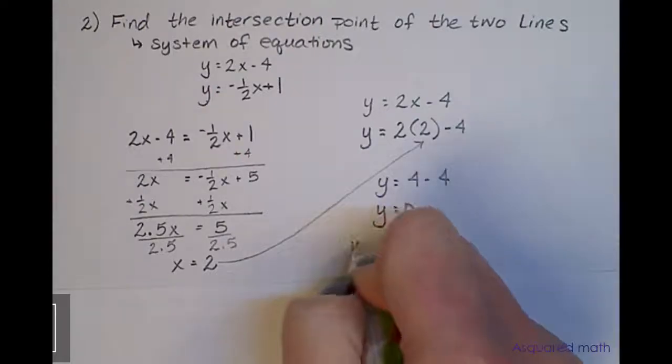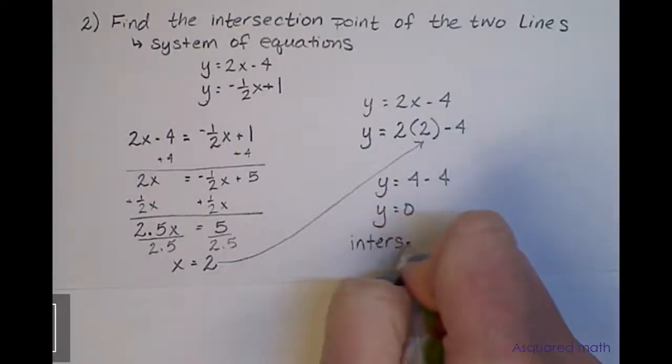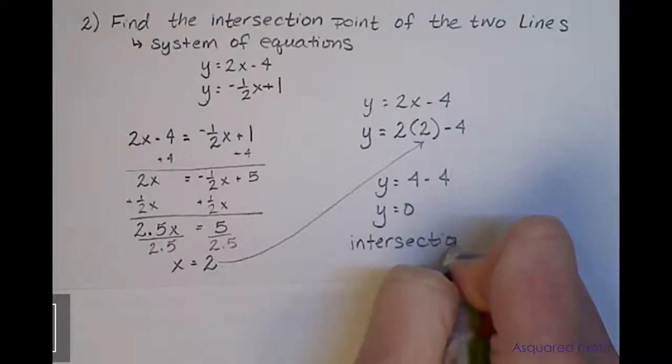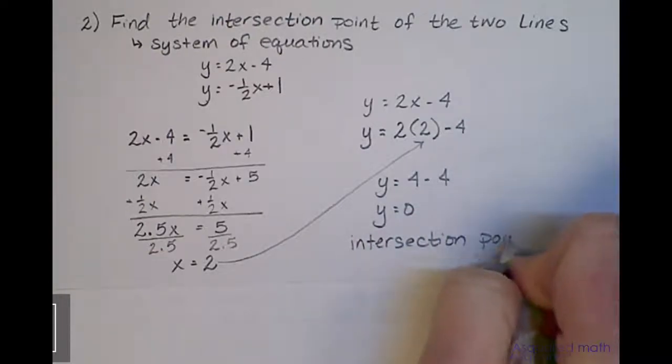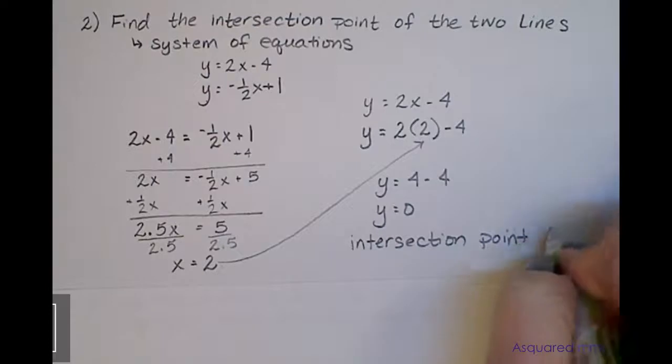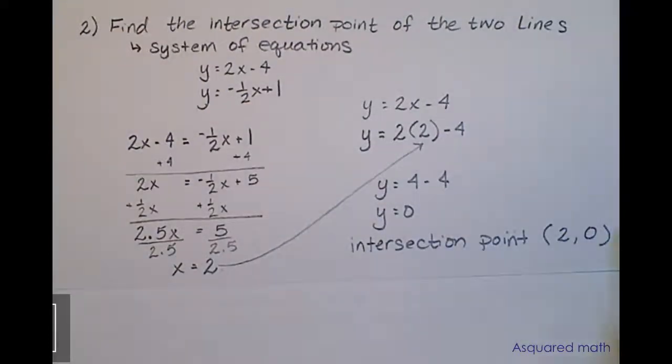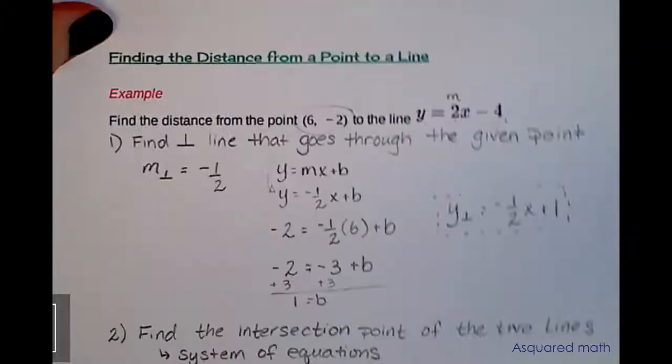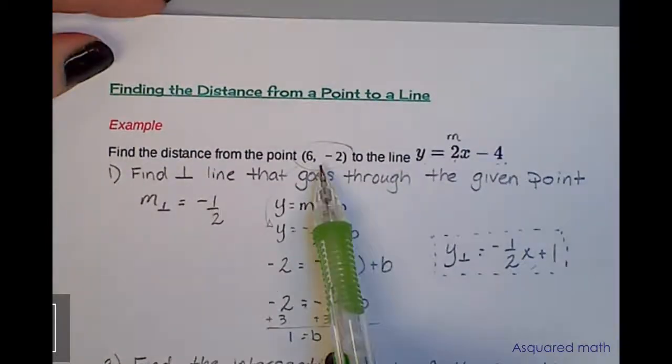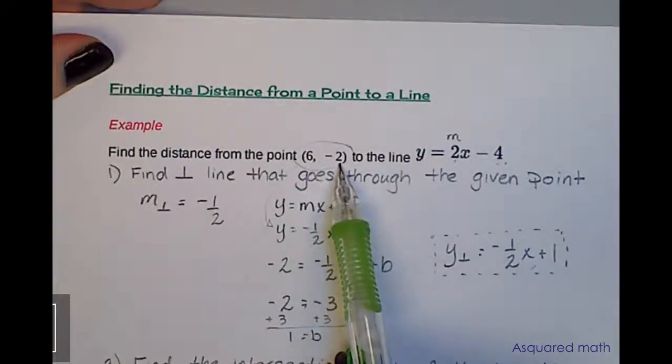So our intersection point has the coordinates x = 2 and y = 0. Now we have two points: (2, 0) and the original point we were given of (6, -2). Those are the two points we're going to work with.